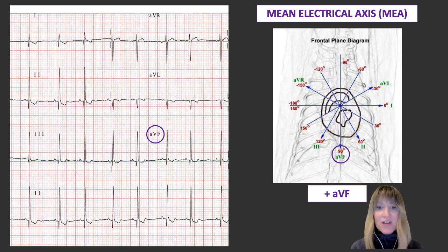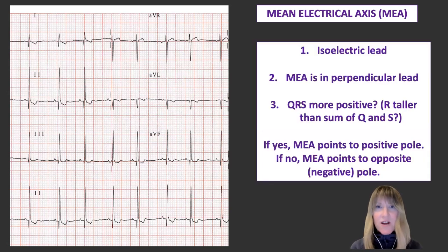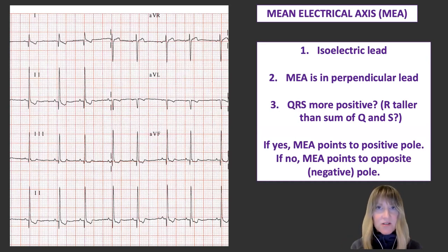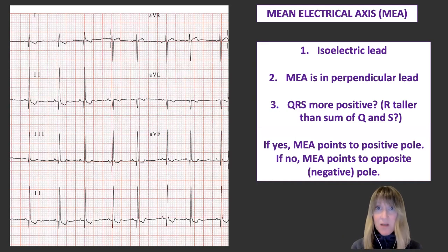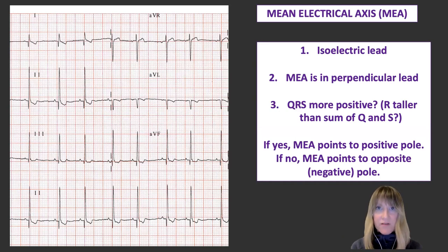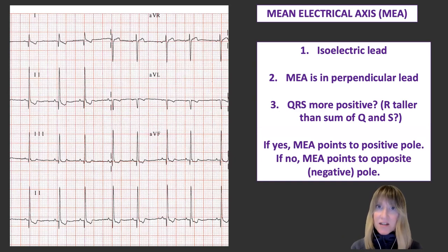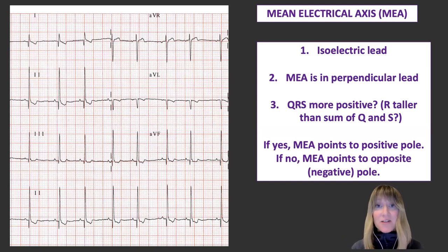Recapping those steps: Step one, find your isoelectric lead. Step two, the MEA lies in the lead perpendicular to that, so find your perpendicular lead. Step three, ask yourself: is the QRS more positive? That is, is the R wave taller than the sum of the Q and the S? If yes, the answer is the positive pole of that perpendicular lead. If no — if the QRS complex is more negative, meaning the Q and S summated are deeper than the R — then the answer is the negative pole of that perpendicular lead.